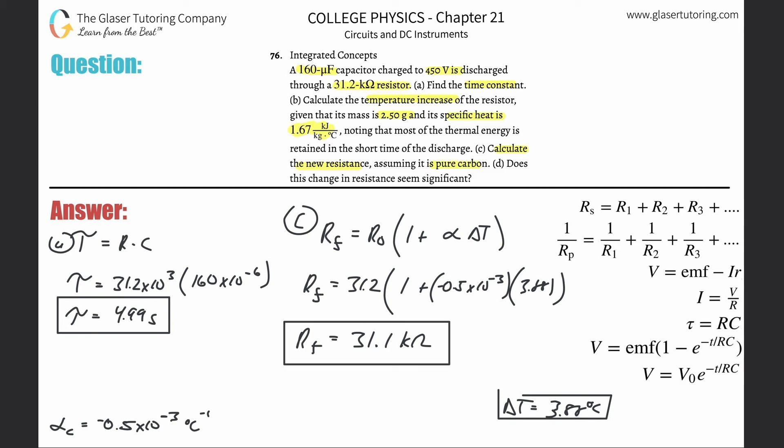And that's the answer for letter C. Does this change in resistance seem significant? Well, we can simply find the ratio, so 31.1 over the initial which was 31.2. It works out to be about 99.8 percent of the initial. I think it's kind of insignificant.